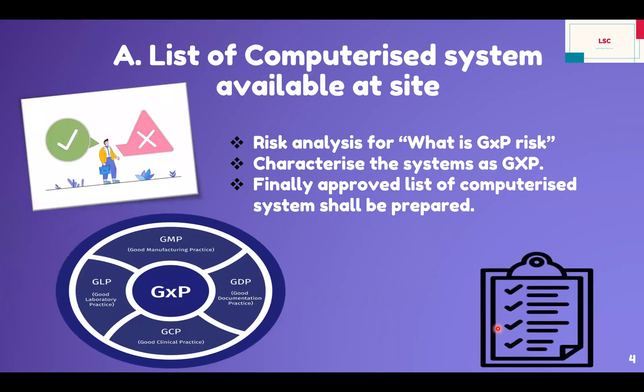The list should be based upon one question: what is the GXP risk? Characterize your system as per your GXP classification. Finally, an approved list of computerized systems shall be prepared.